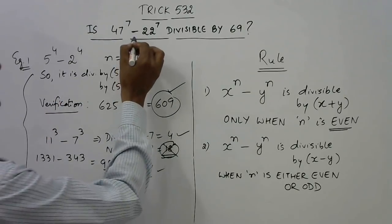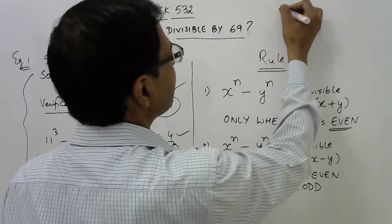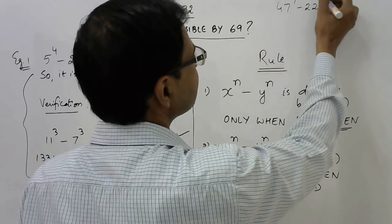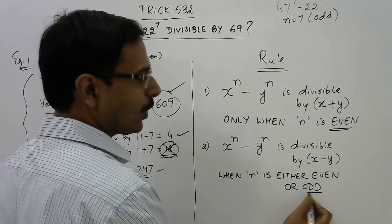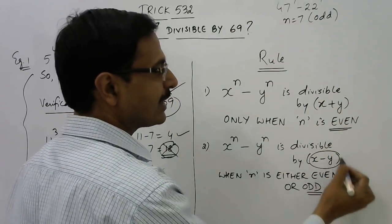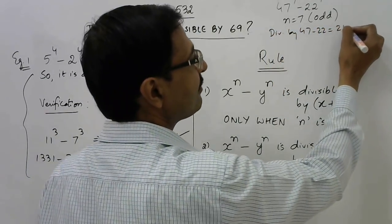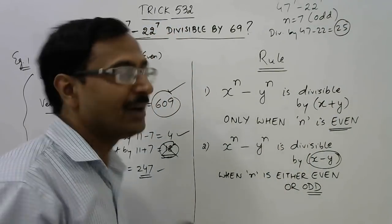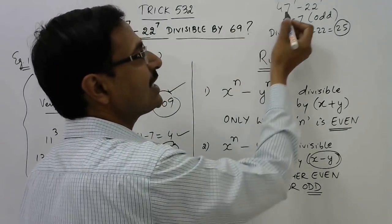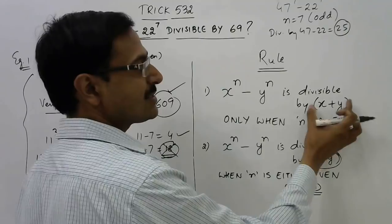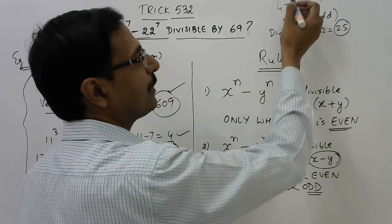Now you can just check the statement which I have written on the top using this amazing concept. See, 47 raised to power 7 and 22 raised to power 7. Now n is 7 here, which is odd. So whenever the power is odd, this expression is divisible by x minus y. So divisible by 47 minus 22, that is 25. Whereas it is given here, is this divisible by 69? Now 69 is the sum. This expression is divisible by sum only when the power n is even, but here power n is odd.